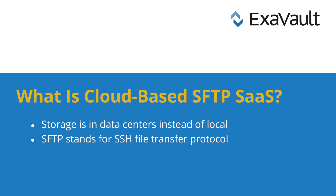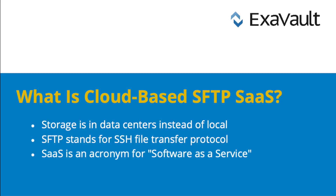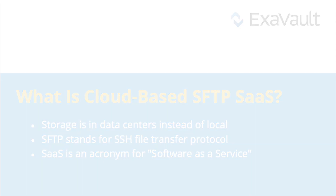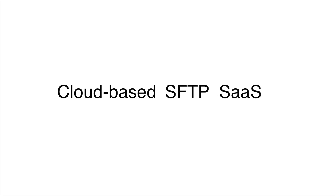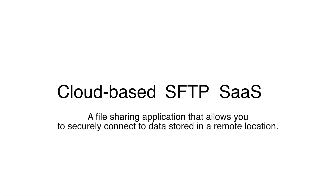SFTP is an acronym for SSH File Transfer Protocol. This protocol is the leading standard for secure data transfer between a computer and a remote location like a data center. SaaS is an acronym for Software as a Service — a hosted application provided by another company that allows you to connect to your cloud-based data. When you put it all together, cloud-based SFTP SaaS is a file sharing application that allows you to securely connect to data stored in a remote location.